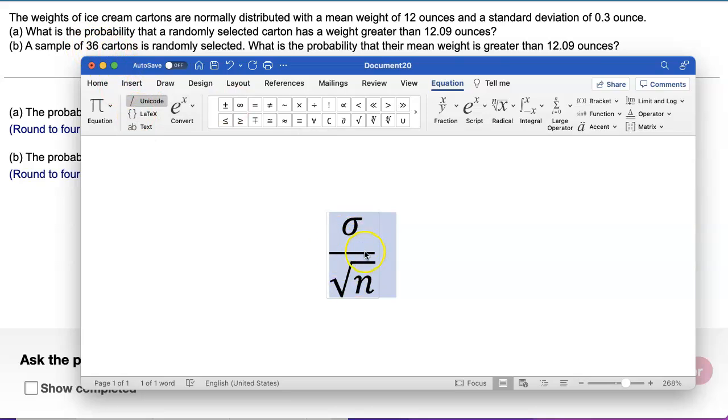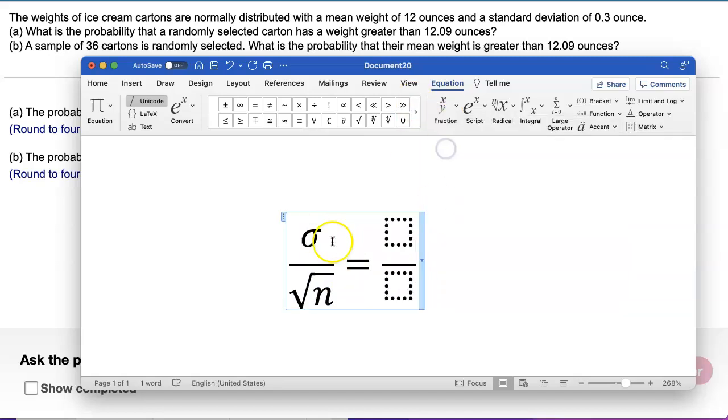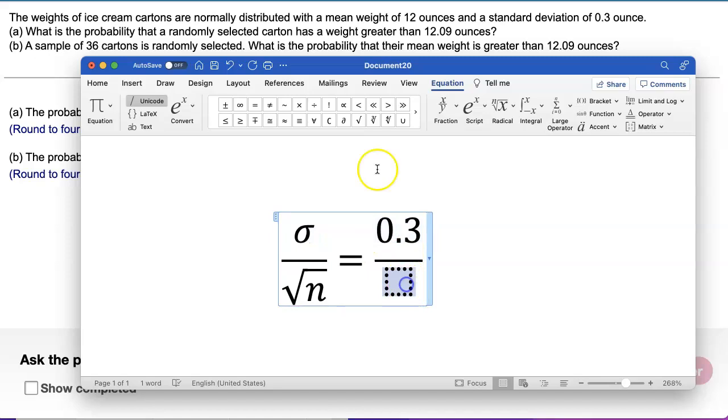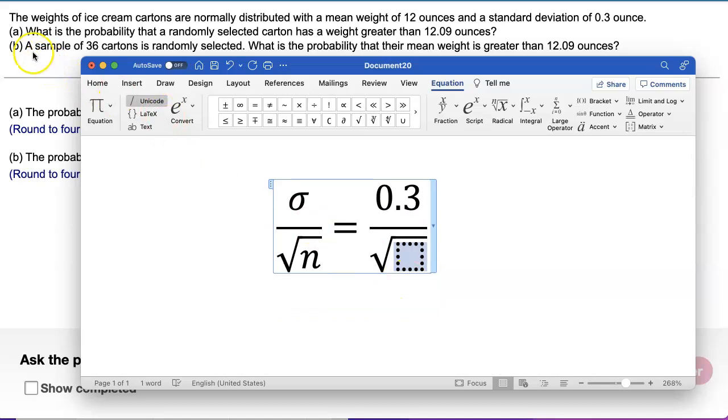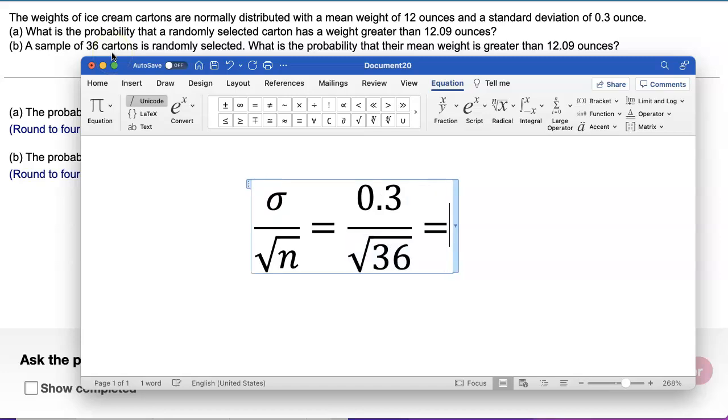Let's do this. What was the population standard deviation given to us in this problem? 0.3. We have to do square root of the sample size, and it said a sample of 36, so 36 is going to be the n value. Now we need to type this into the calculator.